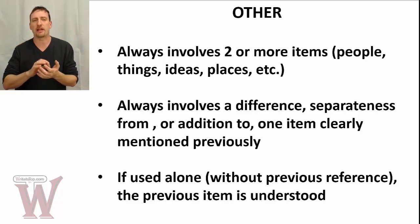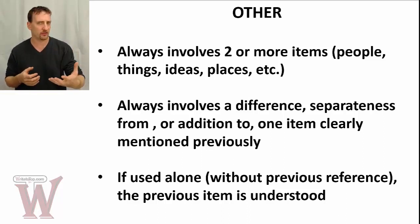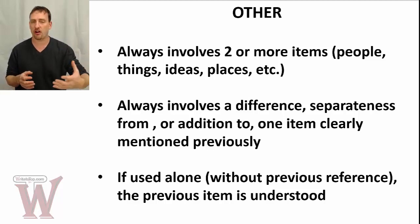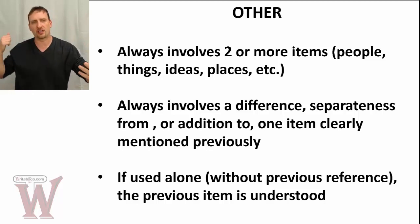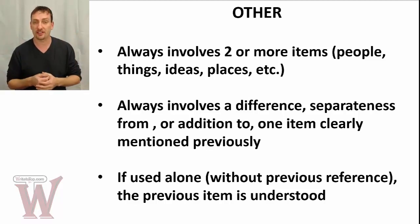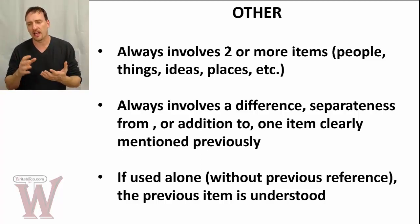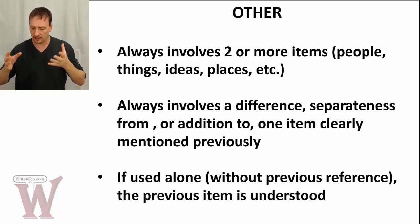"Clearly mentioned previously" means that the reader knows what you are differentiating from, what you're adding to. Something came before and now the other part, the other aspect, the other reason, the other cause, the other person comes next. If you only tell me about "the other" without telling me the first, it can be very confusing. We can use "other" by itself, but when we do, it has to be very clear what the first one was — basically implied. The reader must clearly understand it was there.